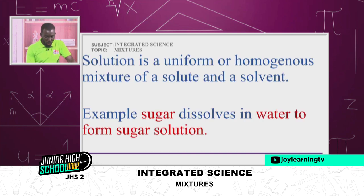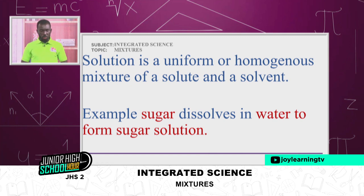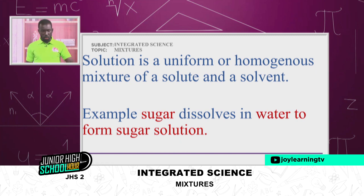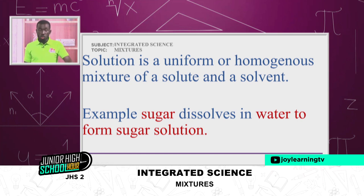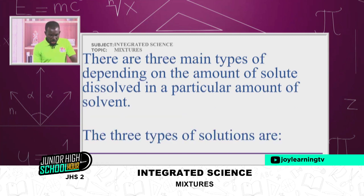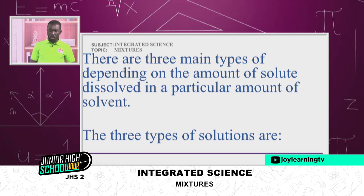Types of solutions. A solution is a uniform or homogeneous mixture of a solute and a solvent. So whenever you talk about a solution, you need a solvent and a solute to form a solution. Example: sugar dissolves in water to form a solution. You can also talk about salt dissolving in water forming a solution — what we call brine.